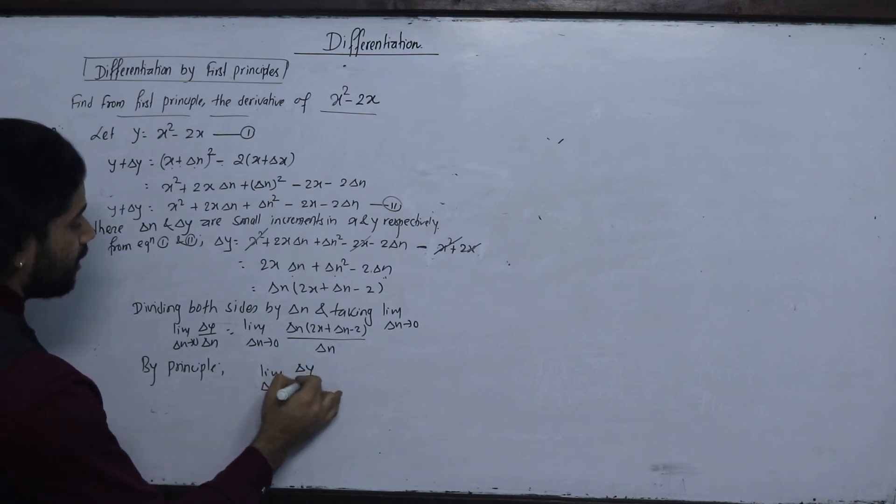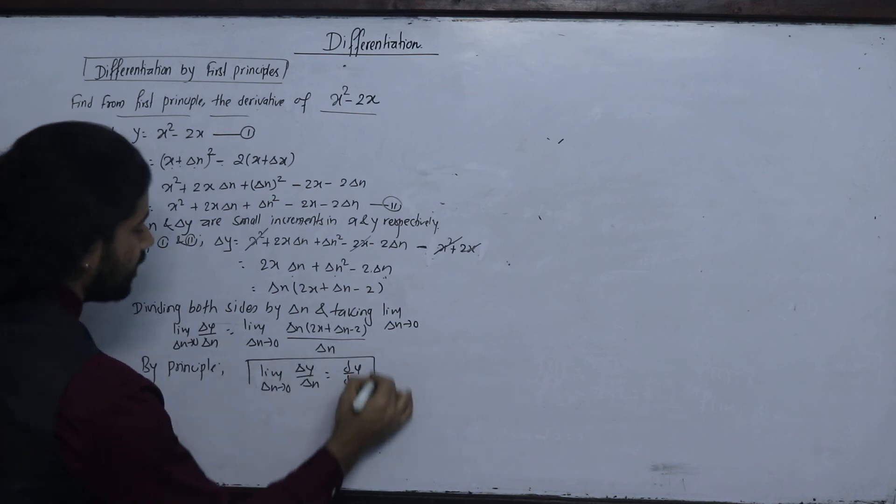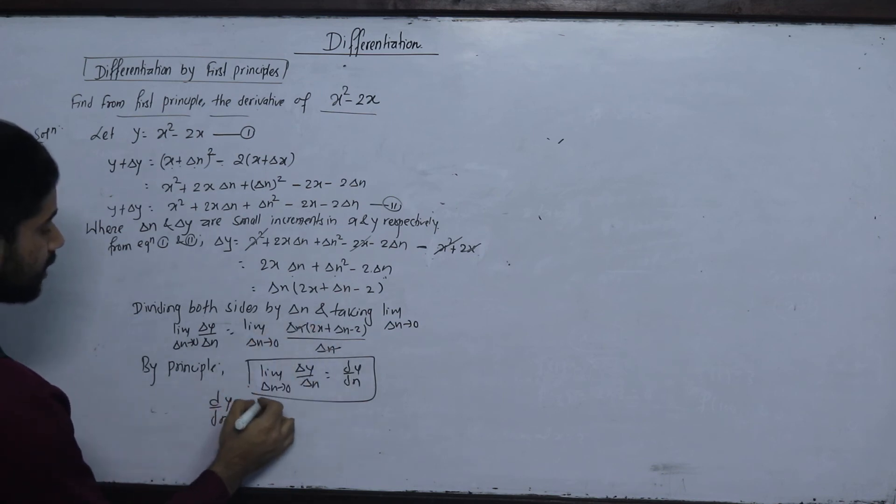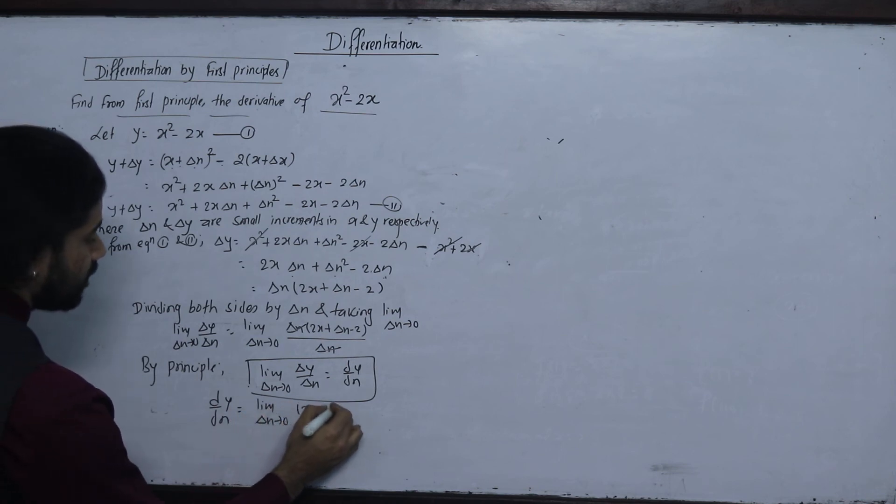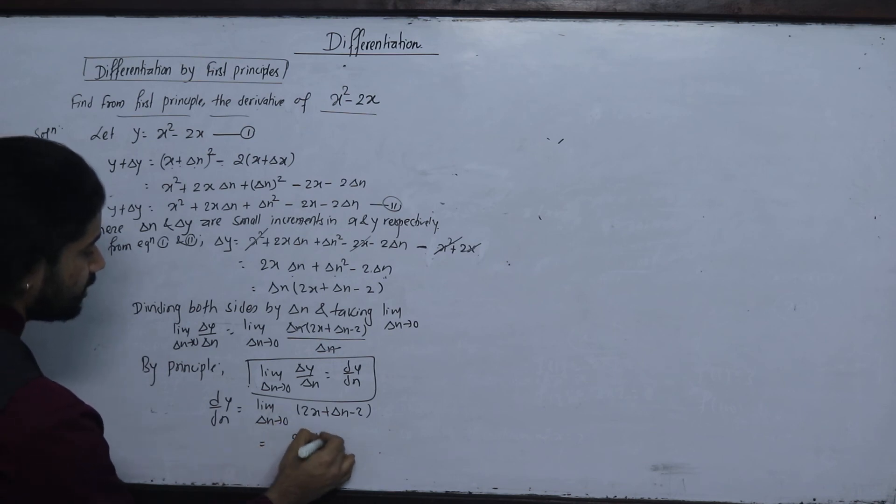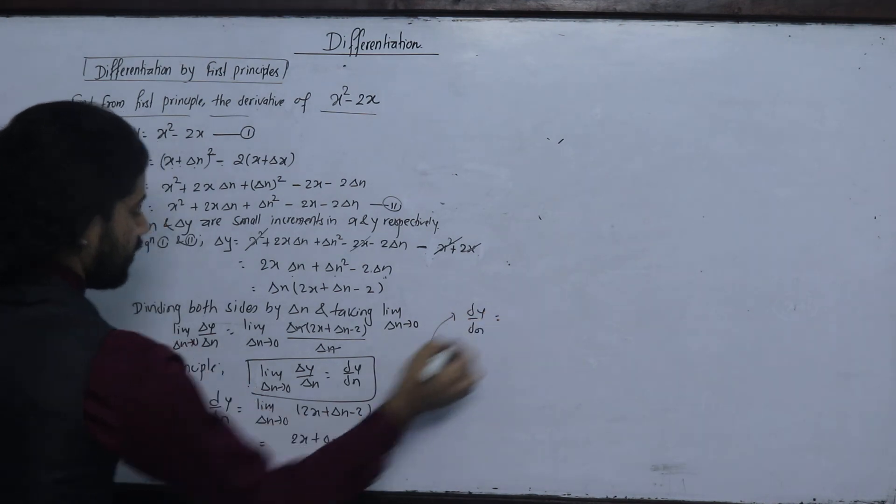This is the differentiation of y with respect to x, the derivative. Substitute delta x: delta x del x tends to 0 plus 2x plus del x minus 2. Value substitute: 2x plus 0 minus 2. The derivative of y with respect to x equals 2x minus 2.